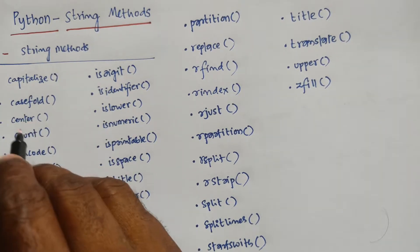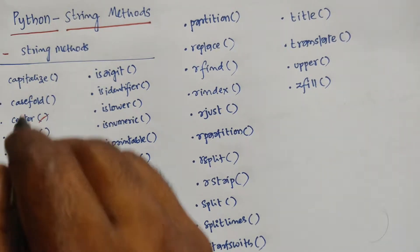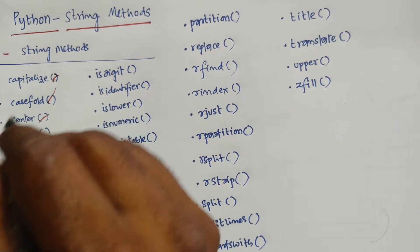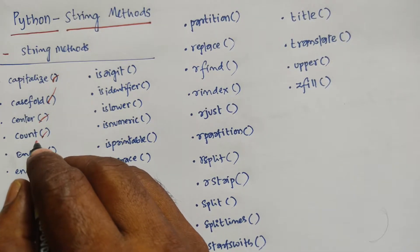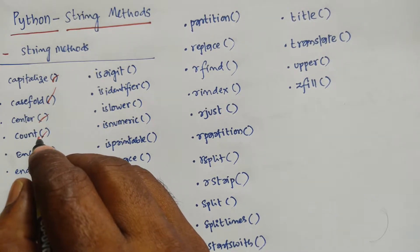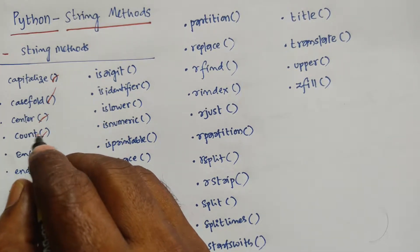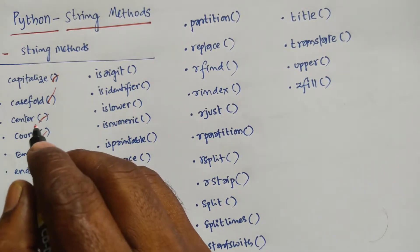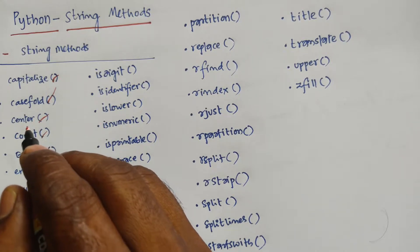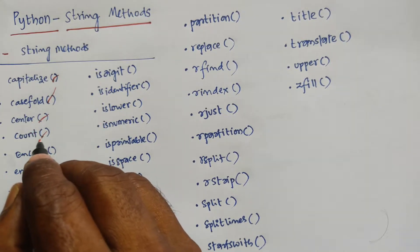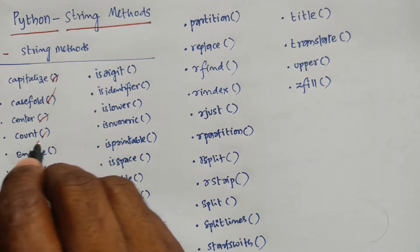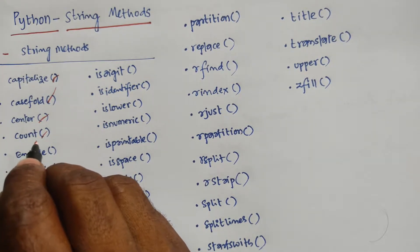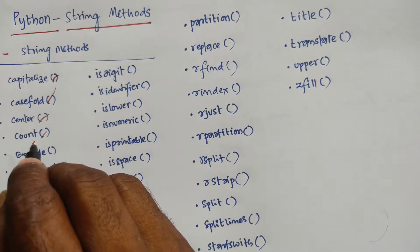Next is count. What is the role of count? It returns the number of times a specified value occurs in a string. That is the value used for count purpose.